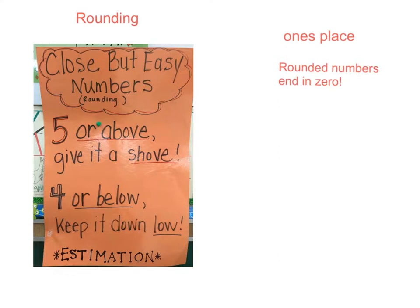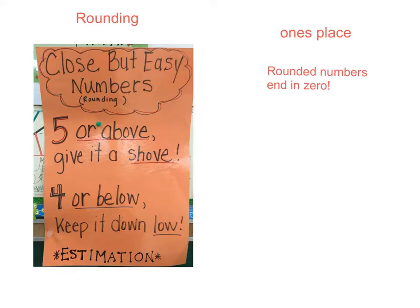We first need to know how to round numbers in order to make estimations. When we round numbers, we want to look at the ones place of the number and round it to the nearest ten, the nearest number ending in zero. Remember, all rounded numbers will end in zero. Let's give it a try.